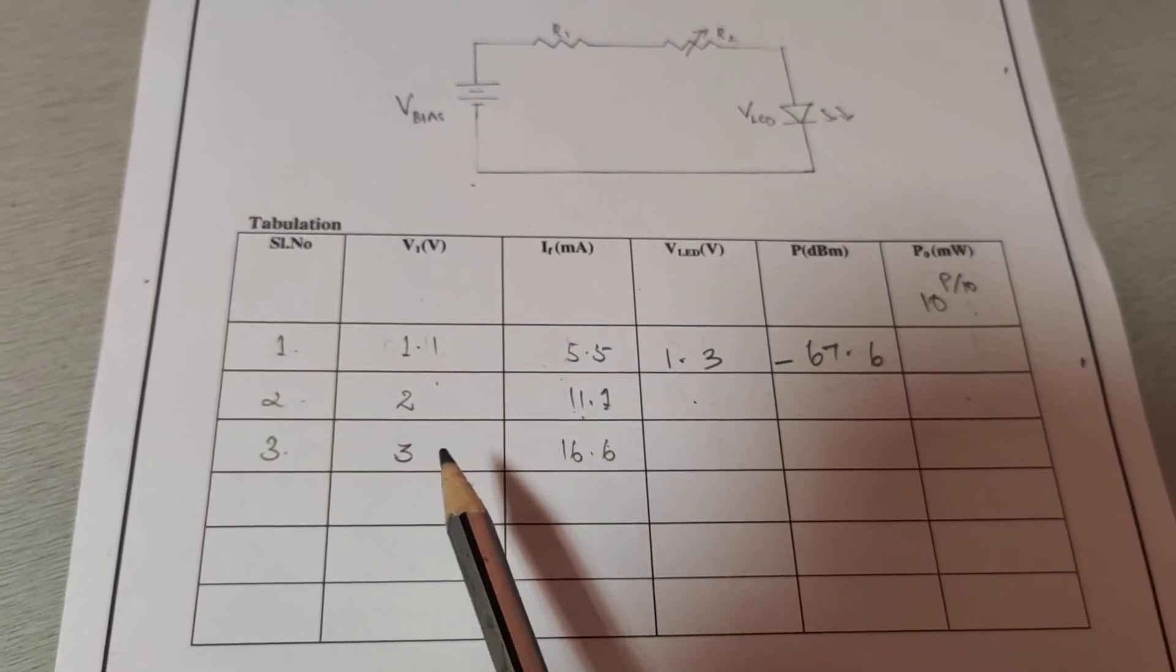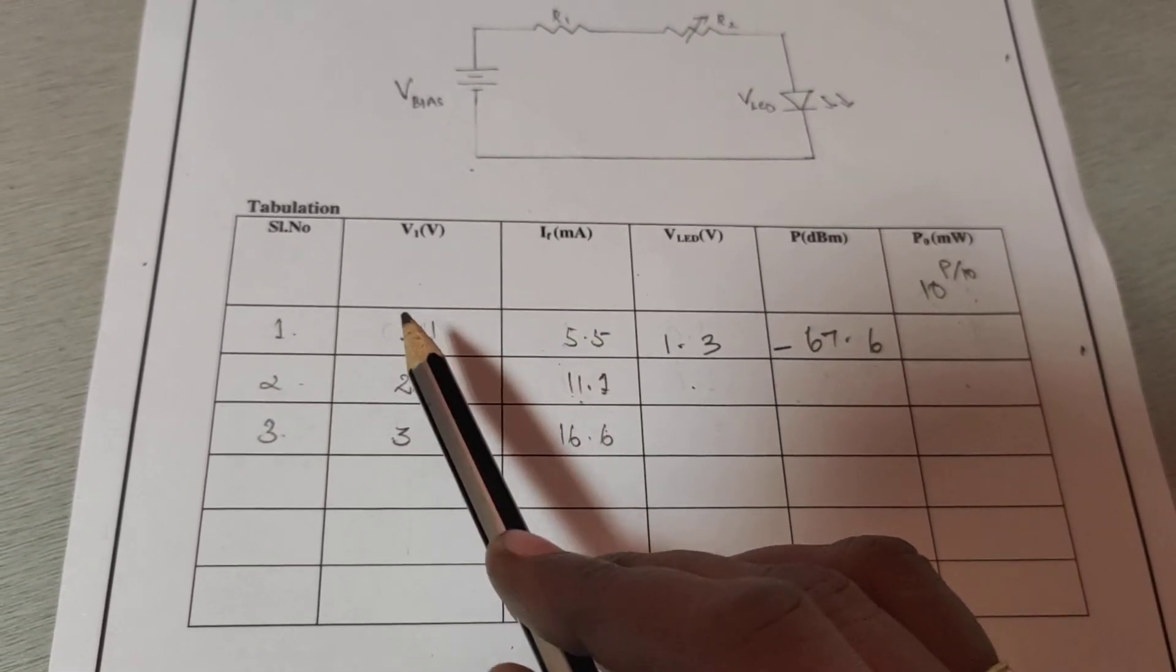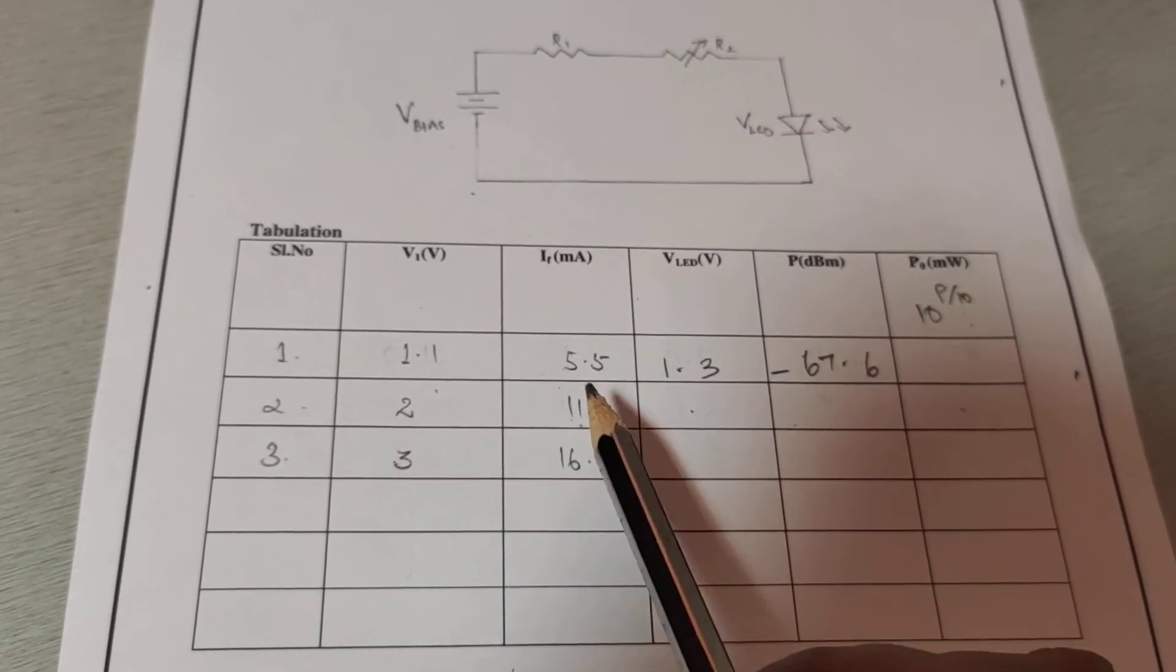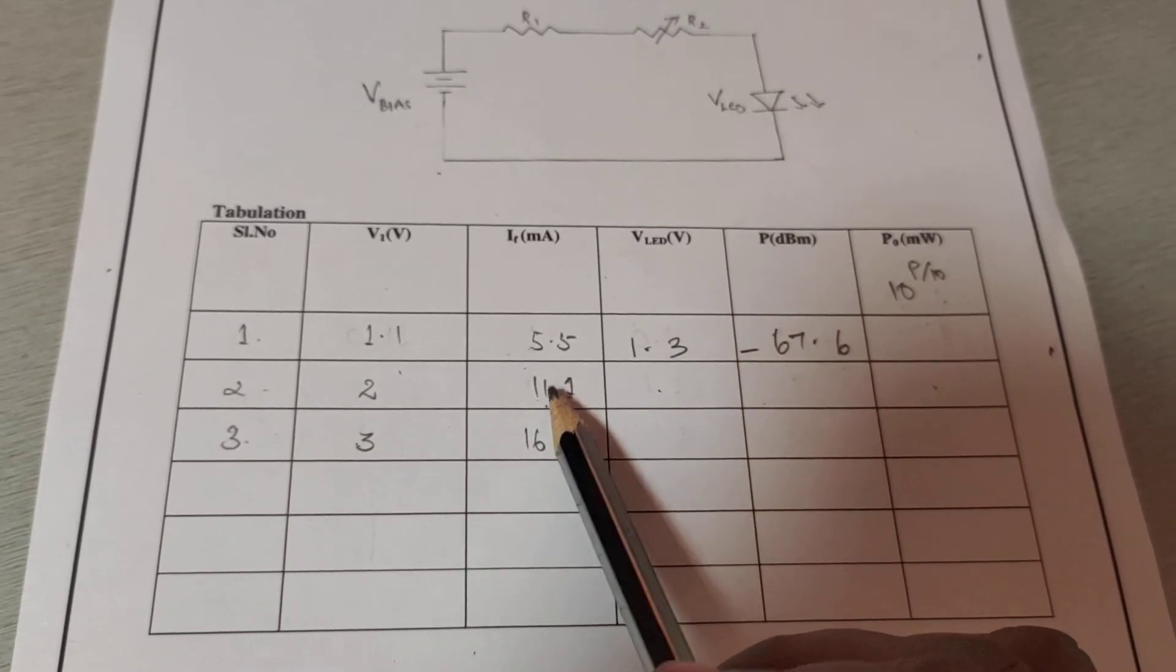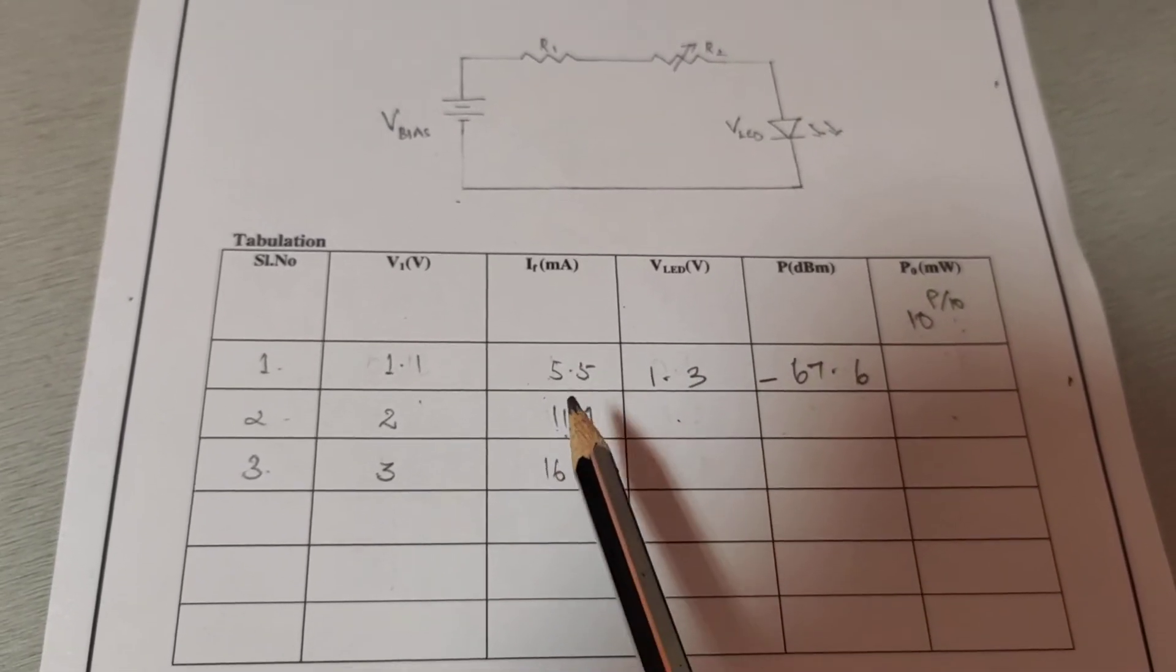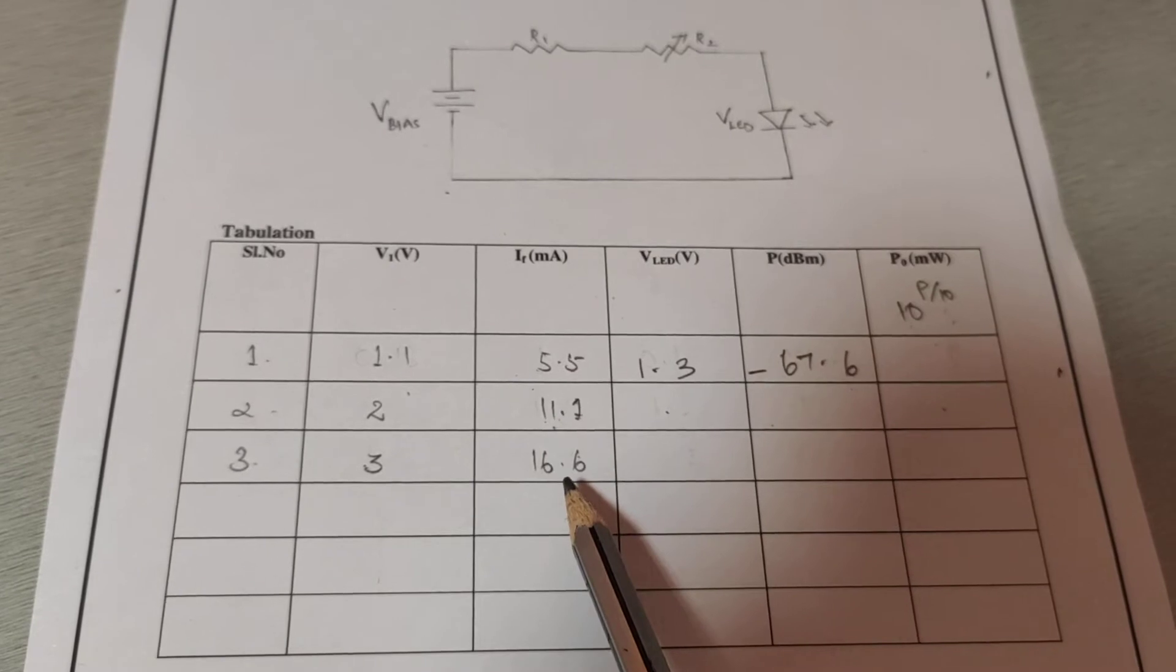We can take any number of readings. After setting the value of V1, we calculate the forward current as V1 divided by R1. From this, I calculate the forward current IF.